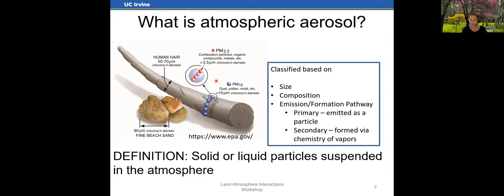Atmospheric particles can also be classified based on their emission or formation pathway. Some particles are emitted into the atmosphere directly as particles — for example, dust and pollen — and those are referred to as primary aerosol. In contrast, some aerosol is formed via the chemistry of gas phase vapors that are emitted, and this aerosol material is referred to as secondary.